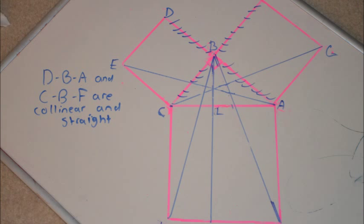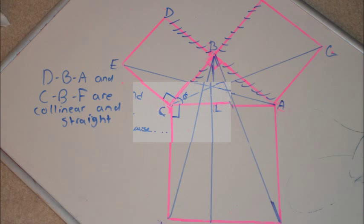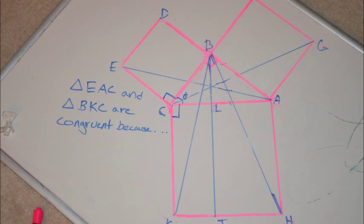In this next part, there are a couple of steps. First of all, triangle EAC and triangle BKC are congruent. We know this because of the SAS postulate. In triangle EAC, line EC is congruent to line BC of triangle BKC, because they are both sides of the square EDBC.